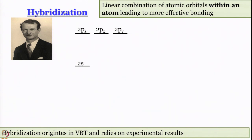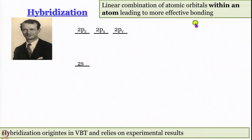Hybridization was one of the concepts introduced by Linus Pauling. What he said is that we need more effective bonding - more effective bonding means we need to minimize bond pair-bond pair or other repulsions. To do that, since we do not have suitable orbitals, we have to produce suitable orbitals by taking linear combinations of atomic orbitals.